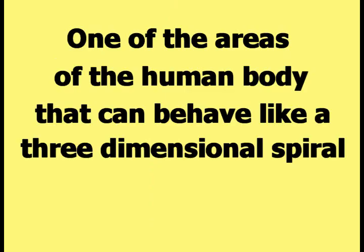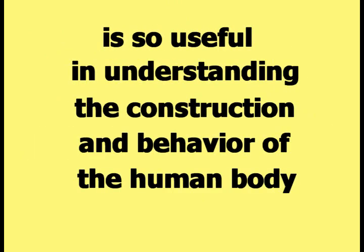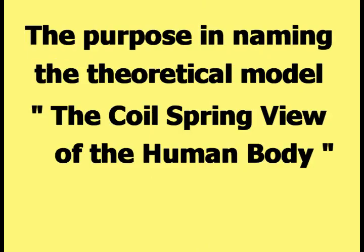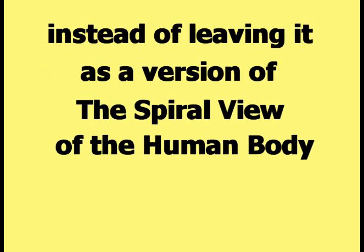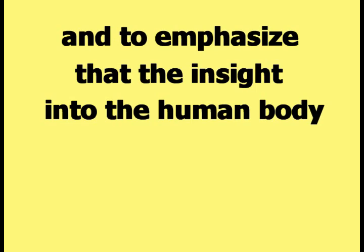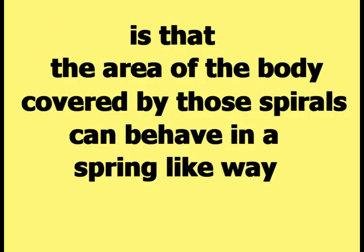One area of the human body that can behave like a three-dimensional spiral is so useful in understanding the body's construction and behavior that it has been given its own name. According to the coil spring view of the human body, the body can be treated as two spirals. This model emphasizes that a spiral can behave like a spring, and that the area covered by those spirals can behave in a spring-like way.